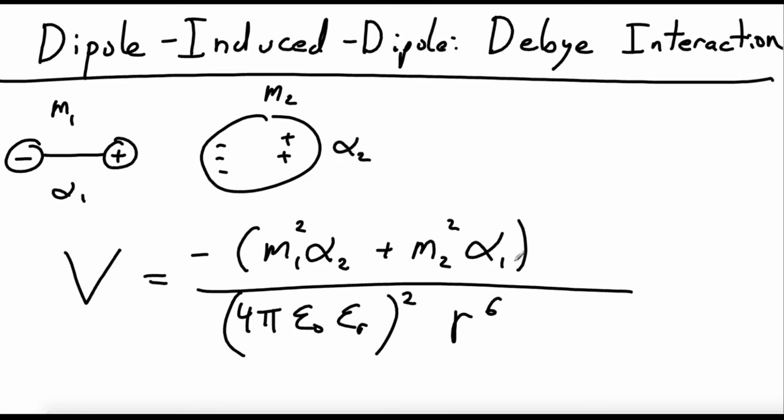And so what this tells us is that, for instance, in the first example I gave, this dipole here was equal to zero. We had a non-polar molecule. All that does is knock out this term. We still have this term. But to have this interaction be non-zero, you have to have at least one of these dipole moments be non-zero.